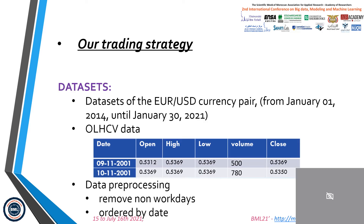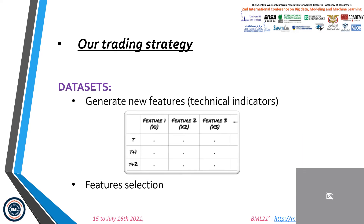For the training of the model, we collected the dataset of the EURUSD currency pair from the 1st of January 2014 until the 30th of January 2021. Each row in the dataset is a daily observation of five variables: open, high, low, close, and volume. For data preprocessing, we made sure to remove non-workdays and order the data by date. To add additional information and improve performance, we generated new features called technical indicators using a Python library called TA-Lib.